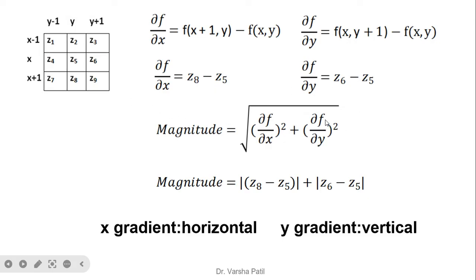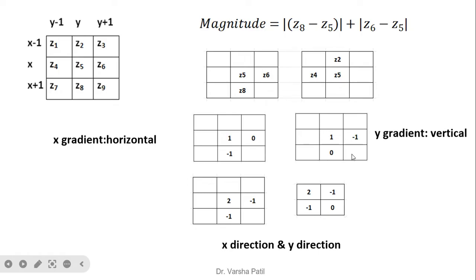The magnitude of the first order derivative is the square root of (∂f/∂x)² + (∂f/∂y)², but for simplicity we skip the square root and squares, taking just the absolute value. So we can take either z8 minus z5 or z5 minus z8. The x gradient finds horizontal edges and the y gradient finds vertical edges.